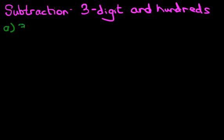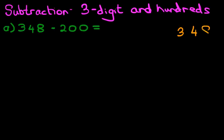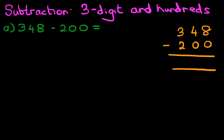What is 348 minus 200? The first stage is to rewrite this question in the vertical format. So let's do that: 348 minus 200. And let's label the columns as well — the right one is the units column, the one next to it is the tens column, and the first one is the hundreds column.